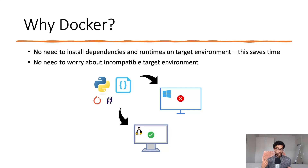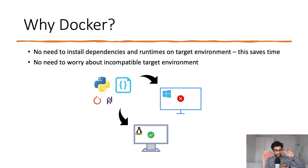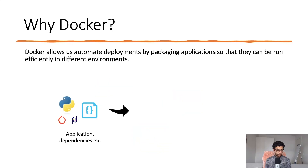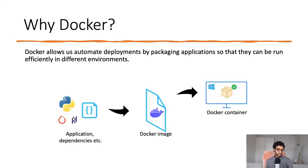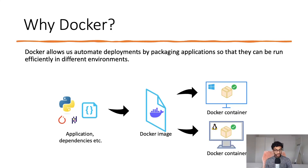So first of all, we don't need to install dependencies and runtimes on the target environment — all we need is this Docker image. And second of all, we don't need to worry about incompatibilities in the target environment. We simply have this Docker image that has all of our code, the runtime, and the dependencies packaged, and we simply run this on our target machine. You package everything into a Docker image and this then runs on both a Windows machine as well as a Linux machine as Docker containers.